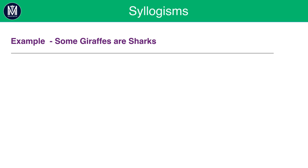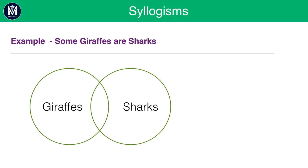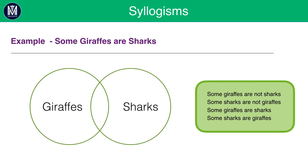For example: 'some giraffes are sharks.' Draw a Venn diagram with giraffes as one circle and sharks as another with an overlap. From this we know: some giraffes are not sharks (the non-overlapping part of the giraffes circle); some sharks are not giraffes (the non-overlapping part of the sharks circle); and from the overlapping region, some giraffes are sharks and some sharks are giraffes.